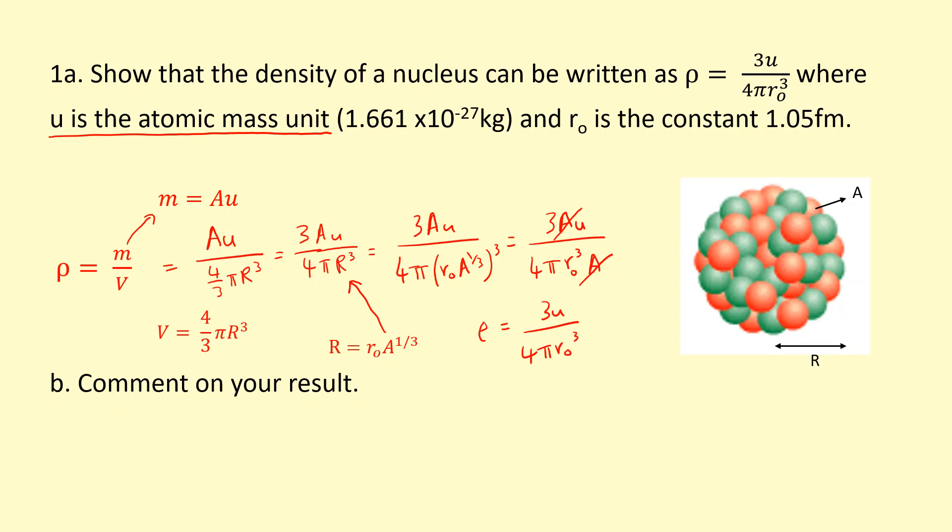If I put that in, hopefully you'll notice that u is a constant, r0 is a constant. I've put these numbers in there, making sure to convert the femtometers into meters. I get a density of the nucleus equal to 3.43 times 10 to the 17 kilograms per meter cubed, which is very dense. But of course, that's where most of the mass of the atom is concentrated in the nucleus, so we expect it to be very dense.